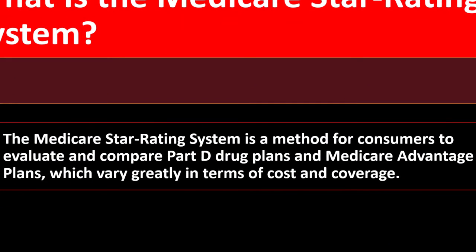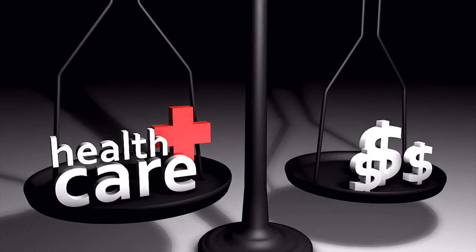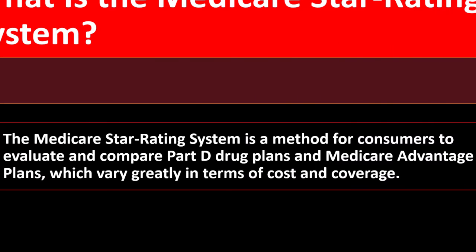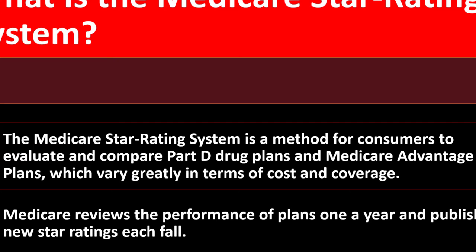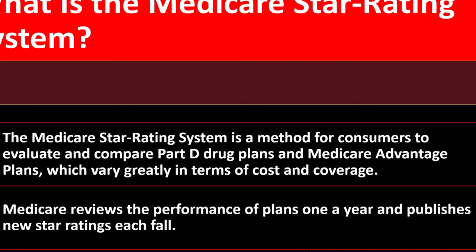The Medicare Star Rating System is a method for consumers to evaluate and compare Part D drug plans and Medicare Advantage plans, which vary greatly in terms of cost and coverage. We've looked at Medicare Part A and Medicare Part B, and now we're looking at Medicare Advantage and the rating system for choosing plans. Medicare reviews the performance of plans once a year and publishes new star ratings each fall.